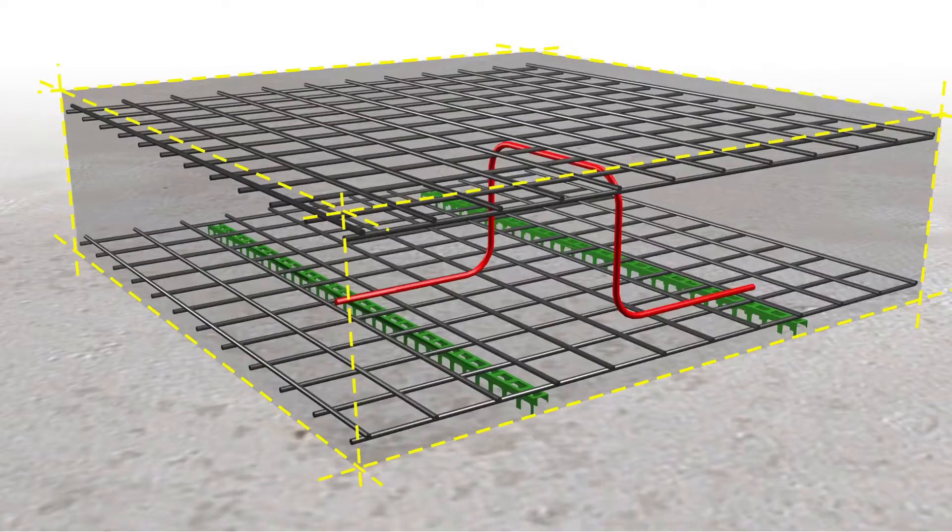Chair reinforcement or simply chair bars are small structural elements used to properly place the reinforcement bars in position and maintain the proper space between the top reinforcement and the bottom reinforcement.